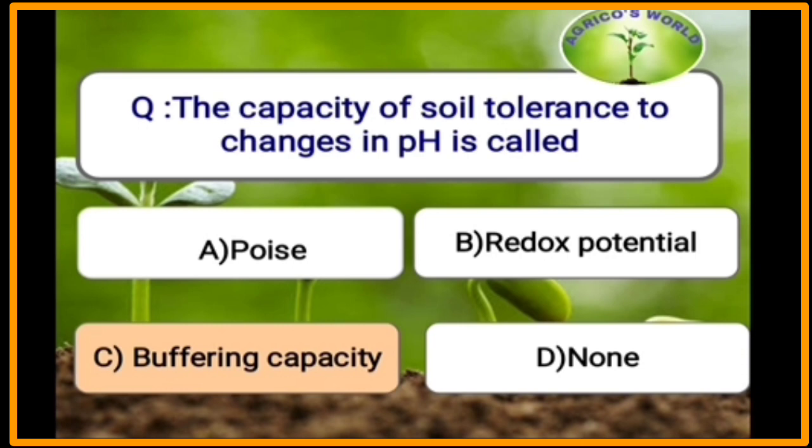The capacity of the soil to tolerate changes in pH is called buffering capacity.